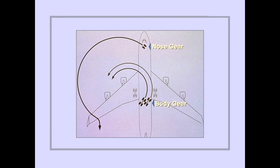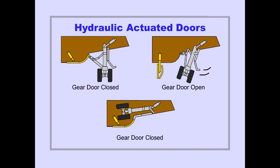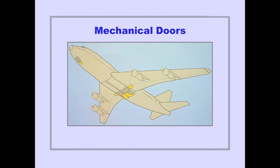In addition to conventional nose gear steering, the airplane has steerable body gear. The truck assemblies for the wing and body gear are tilted by hydraulic actuators to fit into the wheel wells. Each wheel well has hydraulically actuated doors, which are in the closed position with the gear either extended or retracted. Each gear assembly also has mechanical doors linked to the gear.